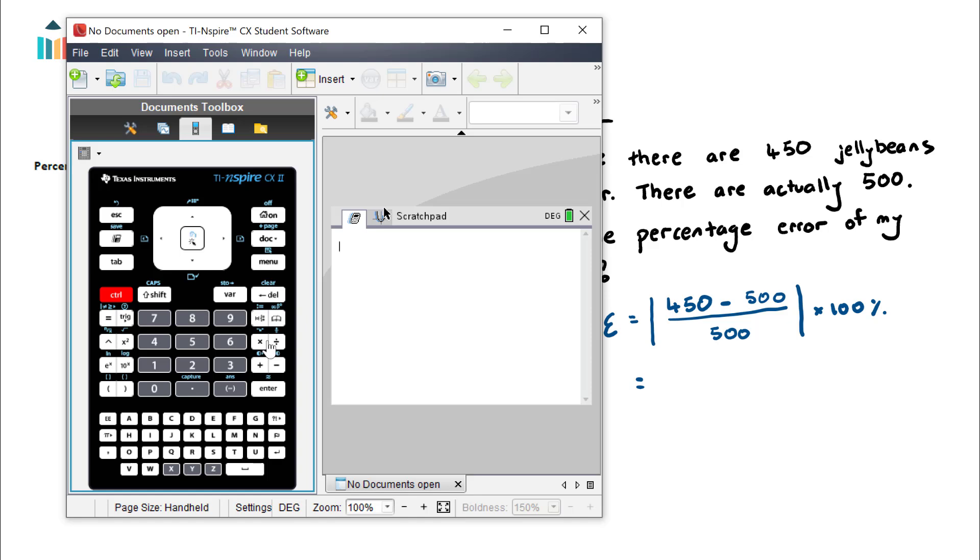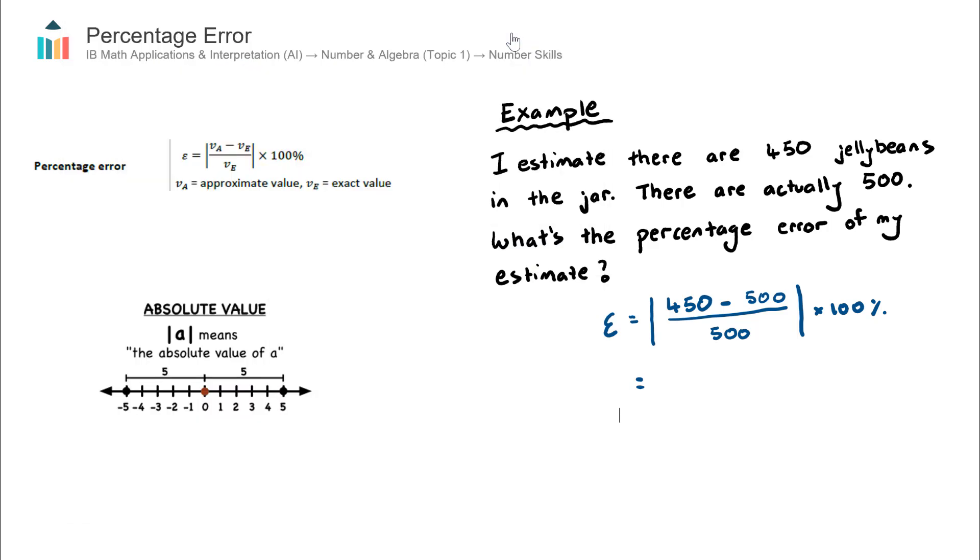So this will be 450 subtract 500 divided by 500. I'm going to convert this to a decimal, is negative 0.1. So you can see here the result is negative. If I want to turn this into a positive, just multiply it by negative 1, and I get 0.1. Now let's multiply it by 100 to turn this into a percentage. That is equal to 10, 10%.